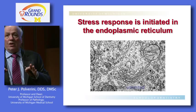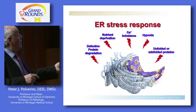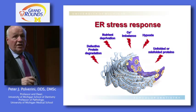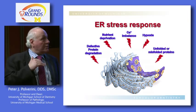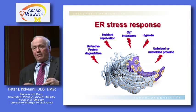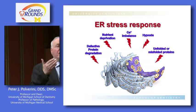Stress can also result from defective protein degradation, where proteins accumulate and are not transported into the proteasome, or from accumulation of unfolded or misfolded proteins. When a protein is produced, it must have appropriate disulfide bonds, be glycosylated, and be folded three-dimensionally to function. When cells are stressed, these proteins begin to accumulate, initiating what we call the stress response. This is typically seen in tumors.